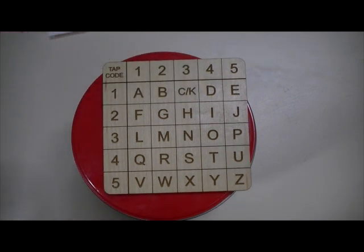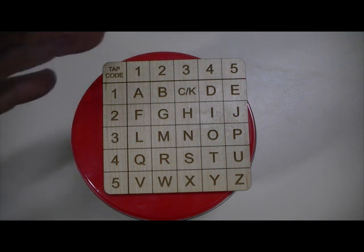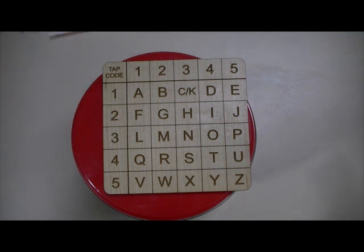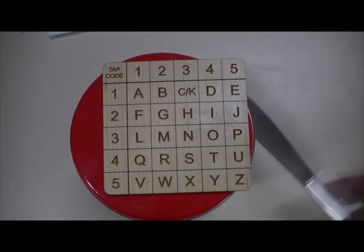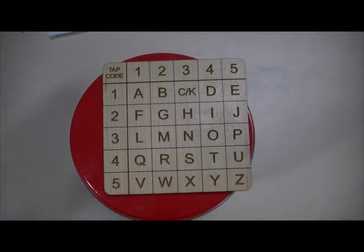Each letter is represented by two sounds. The first sound, the number of knocks, is on the horizontal row here. For example, the F would be two knocks, and then look down, and then one knock. So the F would be represented by two knocks, one knock.